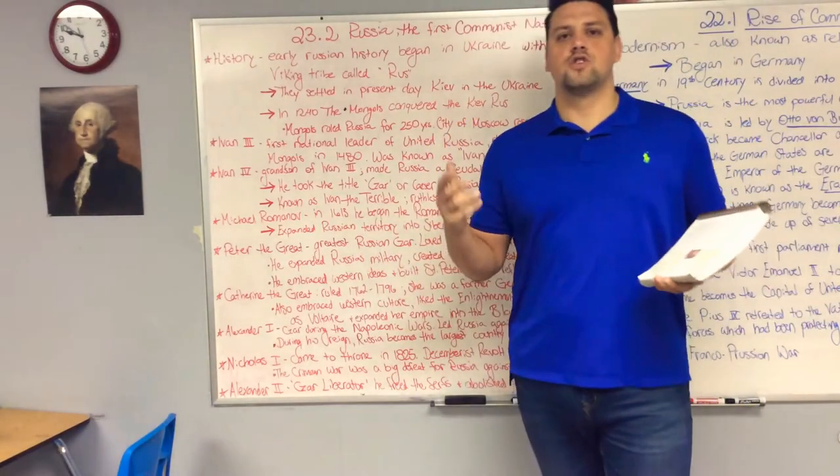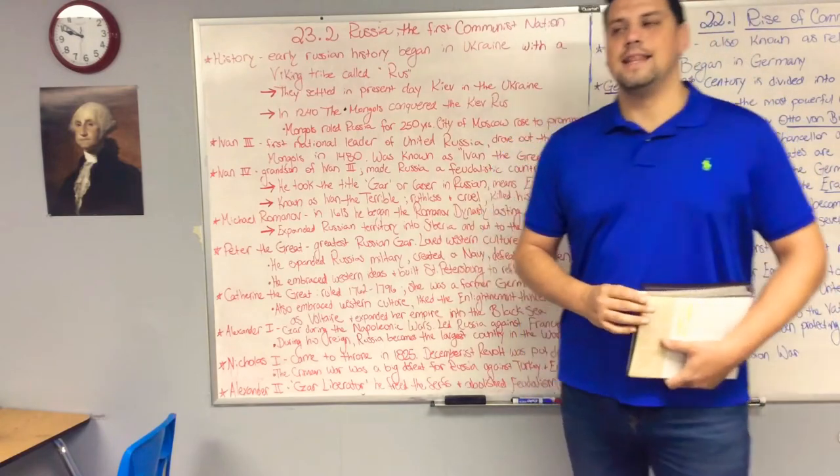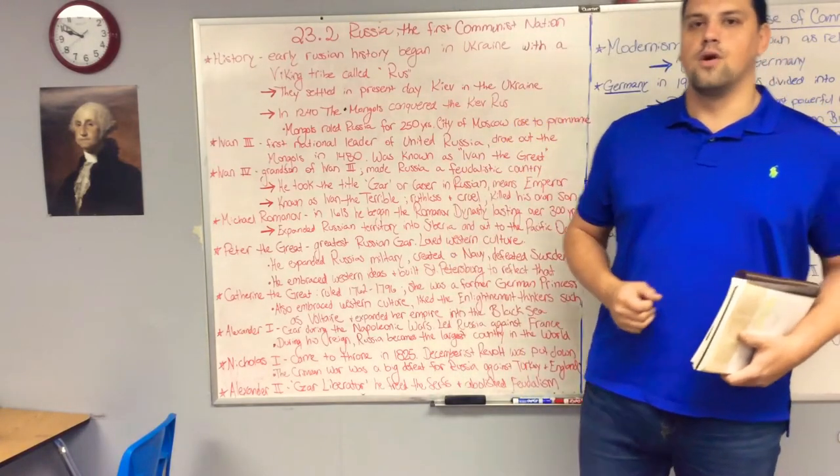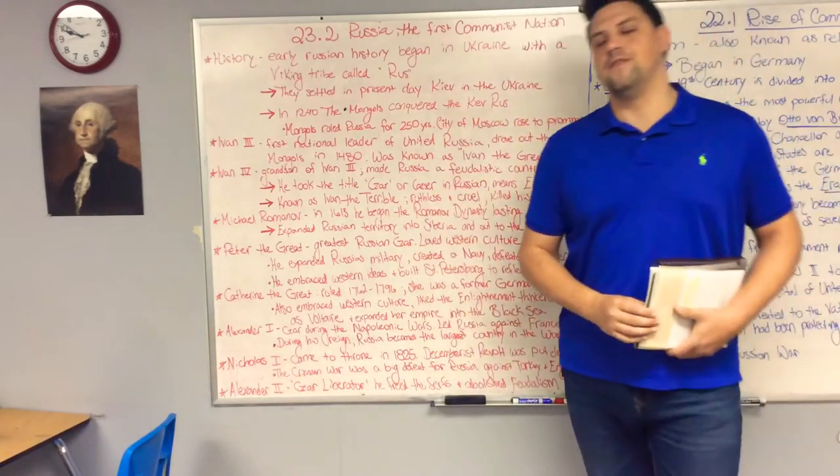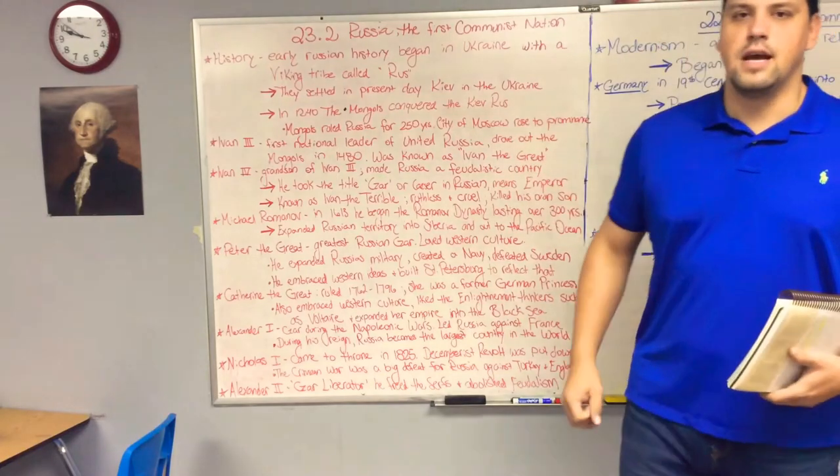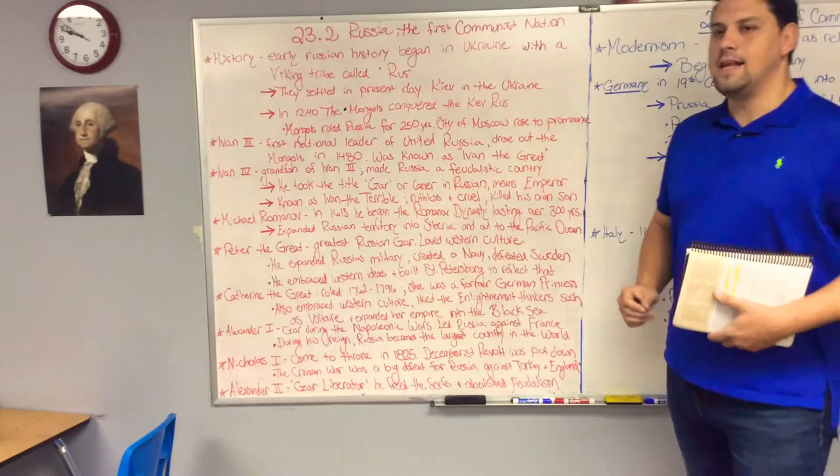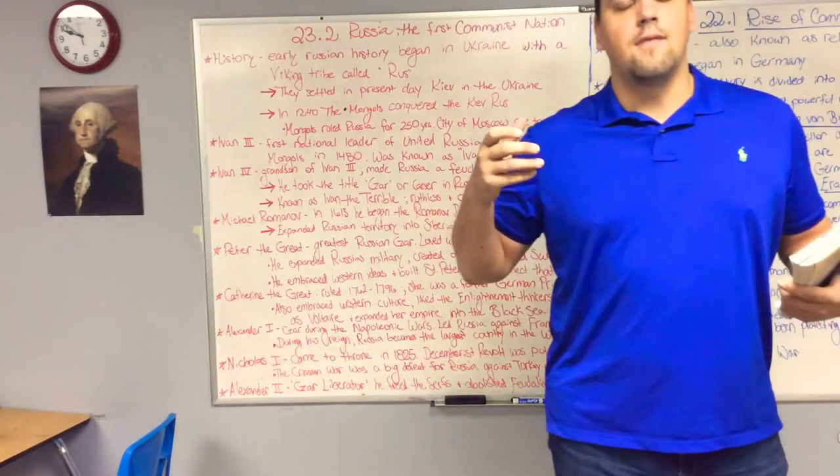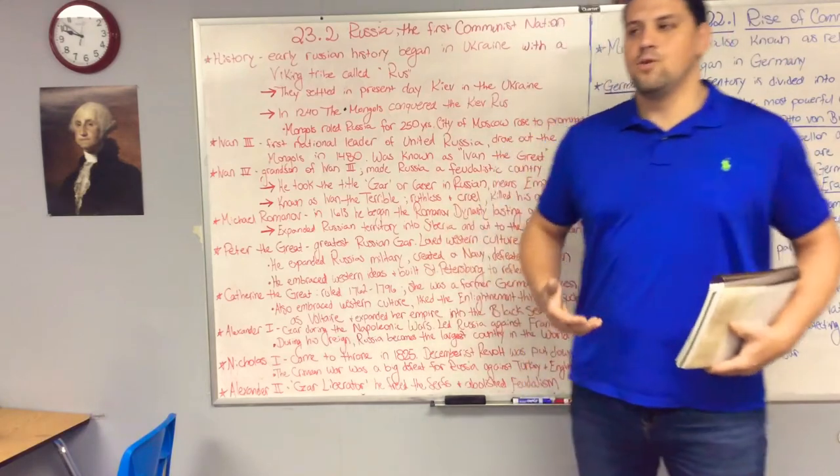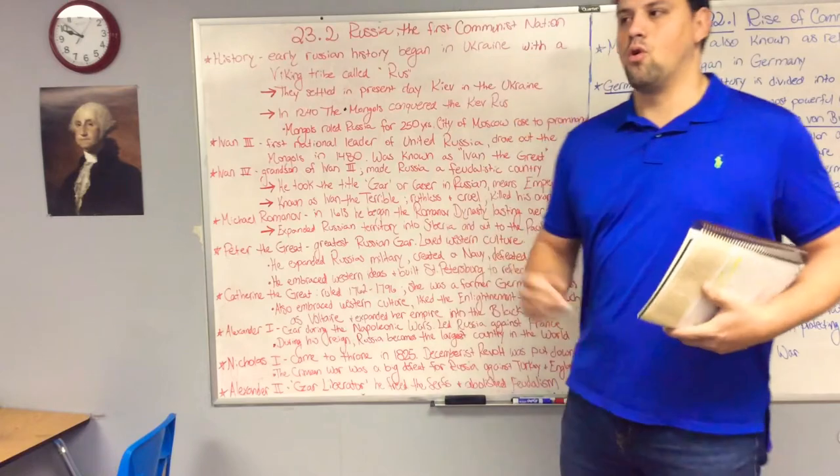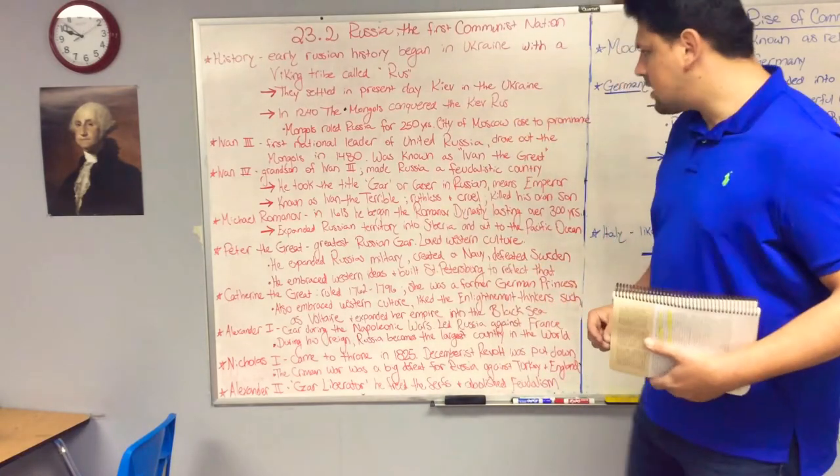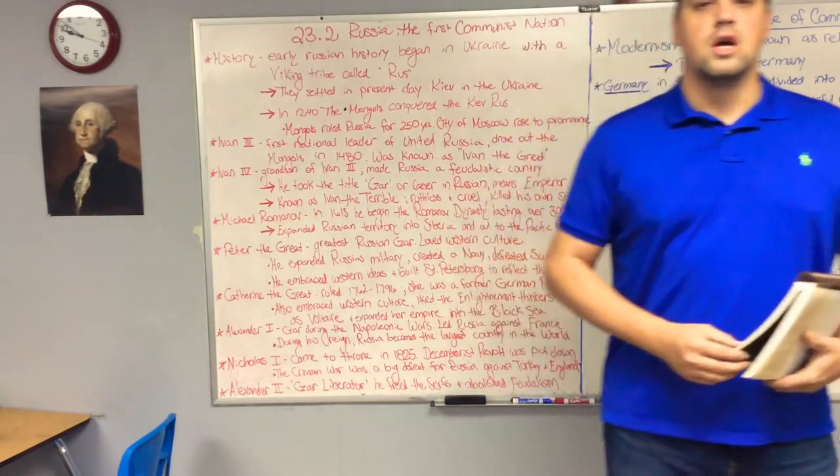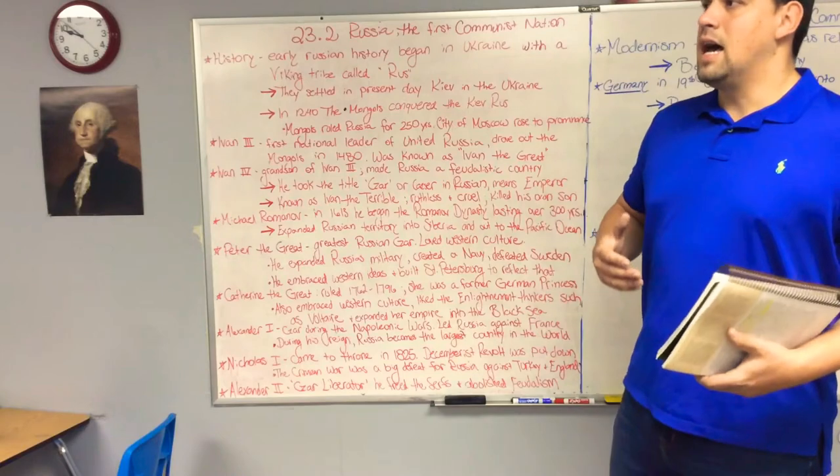In 1480, the Mongols are driven out and Ivan is declared a national hero. He's the first great national king of United Russia and earns the nickname Ivan the Great. Ivan the Great has a grandson named Ivan IV. This is probably the Ivan you've heard of from previous classes. He is known as Ivan the Terrible or Ivan Grozny. He's the first Russian king to adopt the nickname Czar, which essentially means Caesar in Russian, another word for Emperor. He's known as Ivan the Terrible because he's very ruthless and unscrupulous. He even murders his own son, grandson, and daughter-in-law. He is very prone to anger and outbursts.